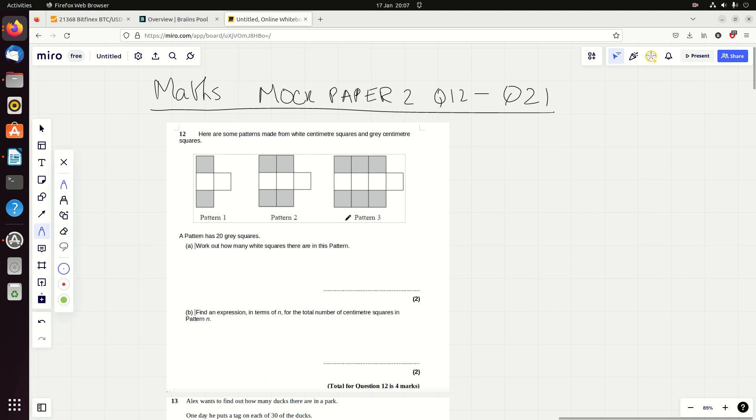Question 12. This looks like one of these nth term ones. A pattern has 20 grey squares. Look at this, the grey squares have gone 2, 4, 6. Clearly the pattern number doubles to get the grey squares because 1, 2, 3 becomes 2, 4, 6. We've got to work out how many white squares there are in this pattern. If it's got 20 grey squares, it must be pattern 10.